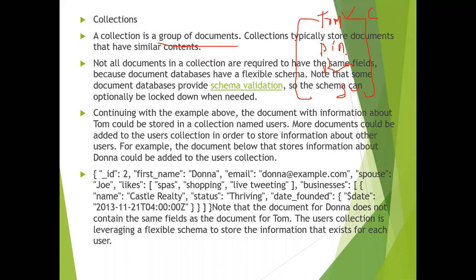For all these candidates, the same information is gathered and put into individual documents. All these documents together are called a collection. Not all documents in a collection are required to have the same fields, because document databases have a flexible schema.